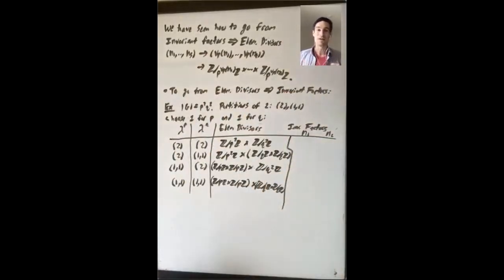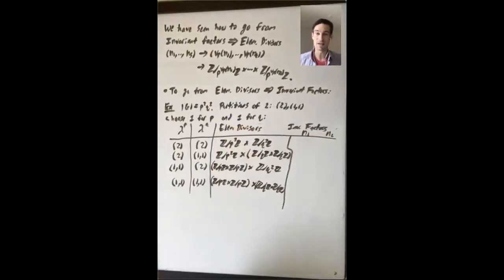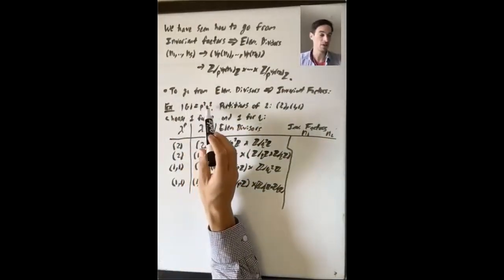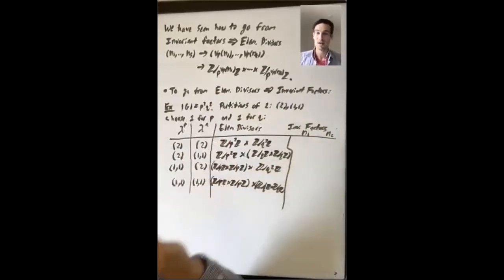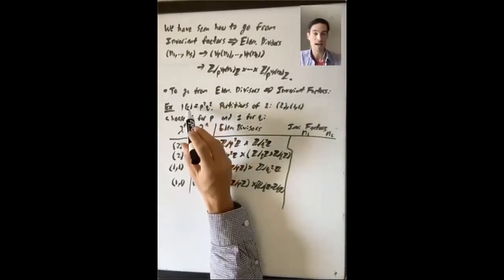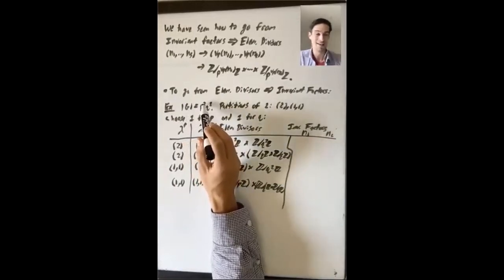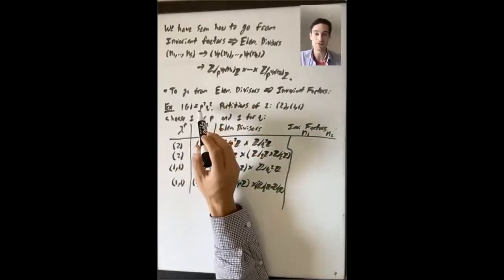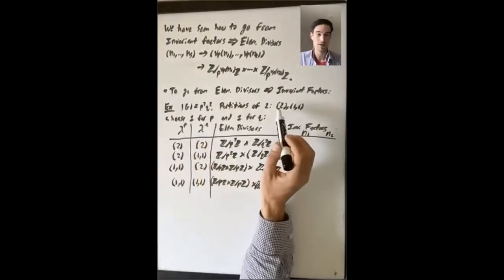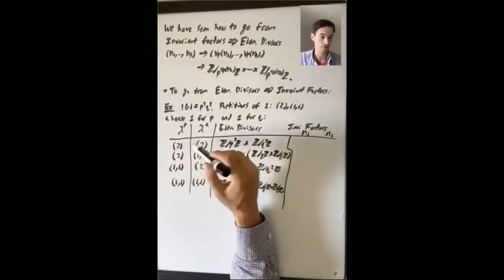So how do you go the other way — elementary divisors to invariant factors? I want to explain this with an example. Let's take G of order p² times q², distinct primes p and q. How do you write down all the possible elementary divisor decompositions? You have a partition for each prime dividing the order of the group — a partition of the exponent, the largest power of that prime dividing the order. So here we need a partition of two for p and a partition of two for q. There are only two partitions of two: (2) and (1,1). We choose one partition for p and one for q, giving four possibilities total.